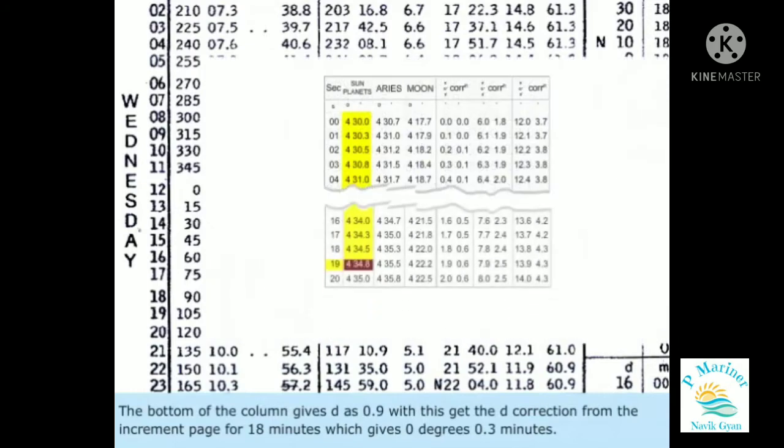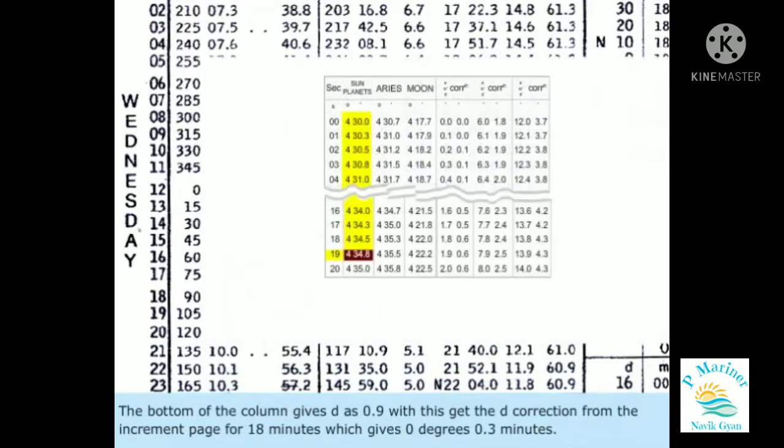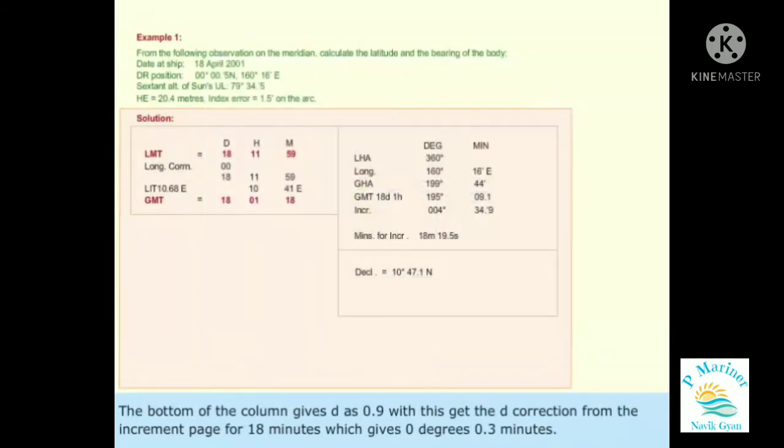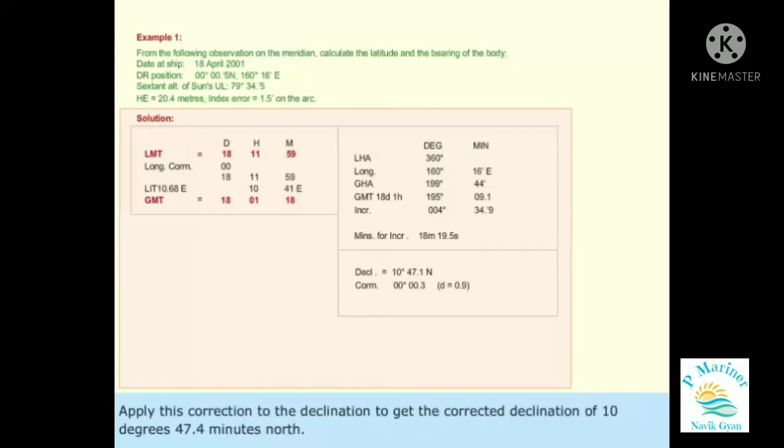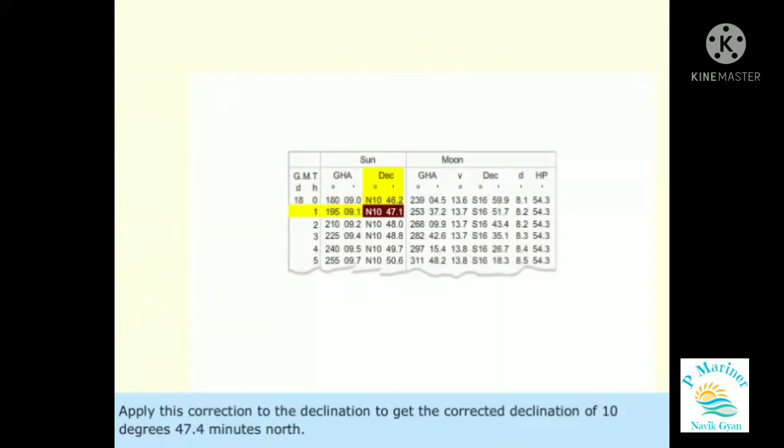The bottom of the column gives D as 0.9. With this, get the D correction from increment page of 18 minutes, which gives 0.3 minutes. Apply this correction to the declination to get the corrected declination of 10 degrees, 47.4 minutes north.